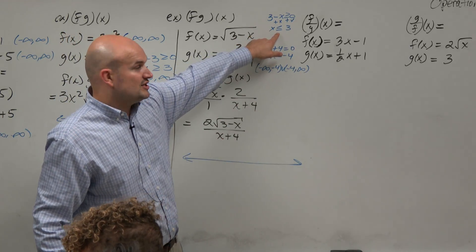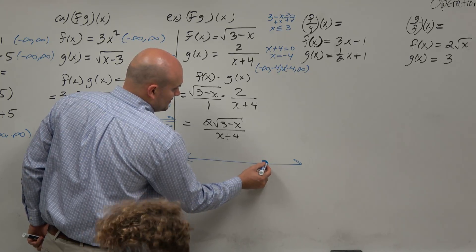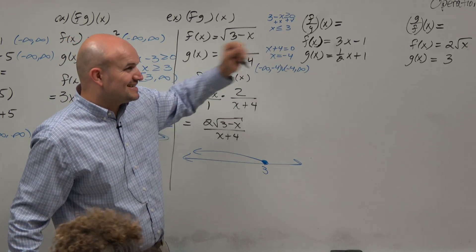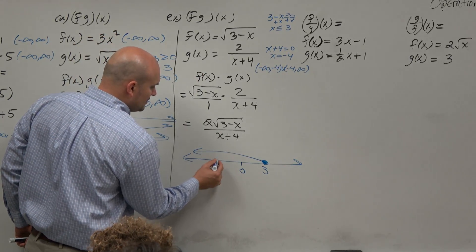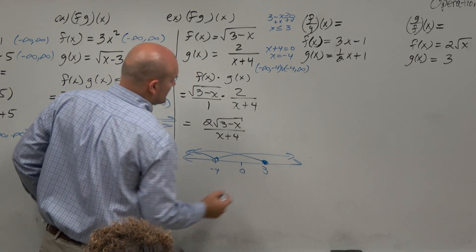If I want to graph this, x values that are less than or equal to 3, 3 is included, goes there. Graphing this domain, all numbers except for negative 4. So here's 0, so negative 4 would be like here.